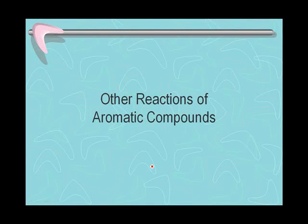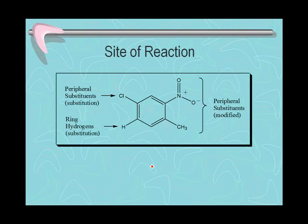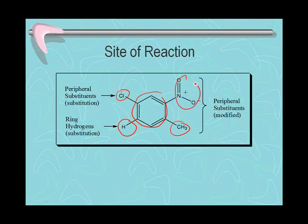In this mini-lecture, we'll learn about some of the other reactions of aromatic compounds other than the electrophilic aromatic substitution reaction, which we learned about in the previous mini-lecture. Today we're going to see how the arene ring itself can undergo chemical reactions, how substituents like halogens and methyl groups can undergo reactions, and how the nitro group can be reduced to the NH2 group.